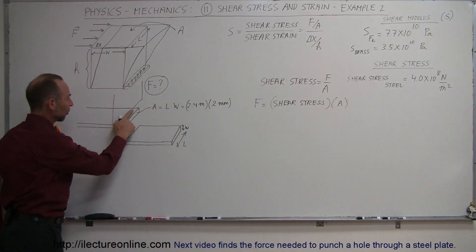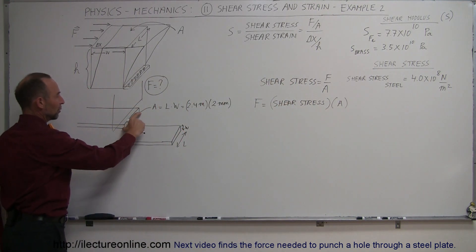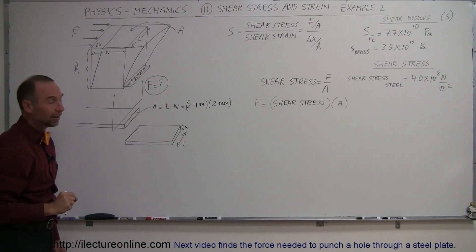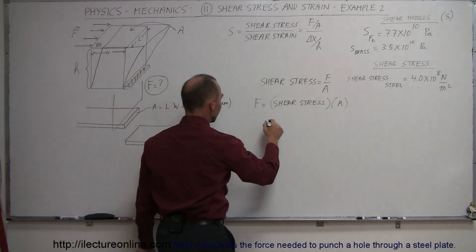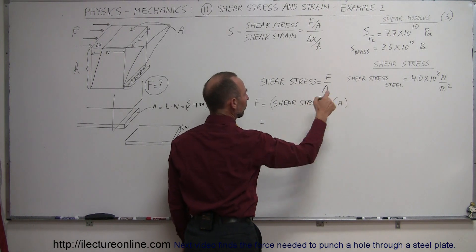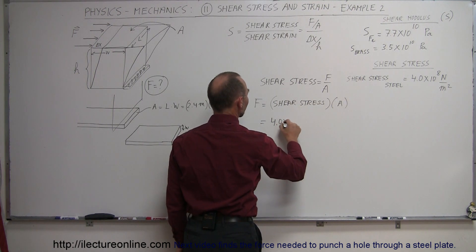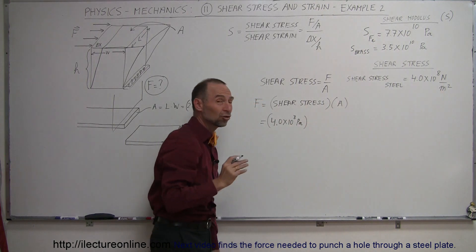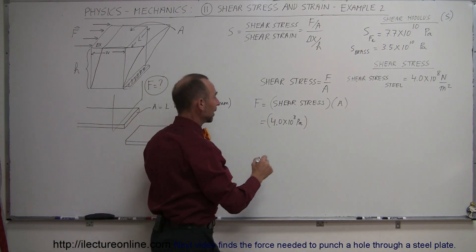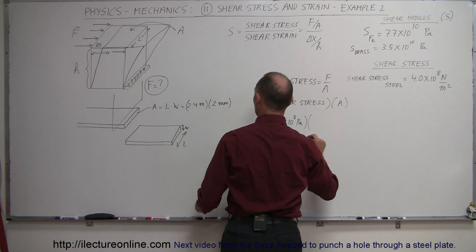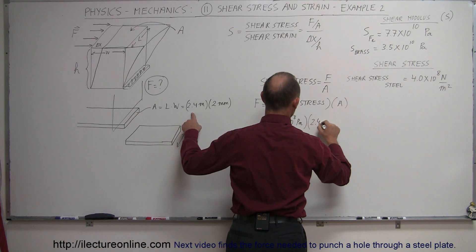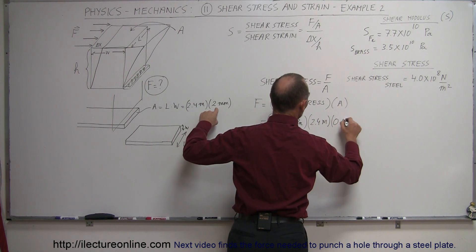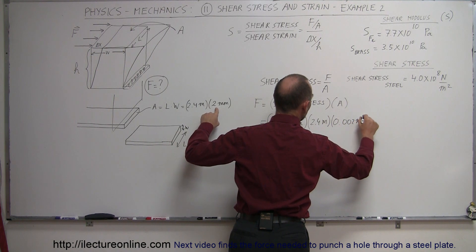The area of the cut is simply the exposed part of the cut, where the area would be the length times the thickness. The shear stress of the material is 4.0 times 10 to the 8 Pascals — not to be confused with the shear modulus — multiplied by the area: 2.4 meters for the length, and 2 millimeters, or 0.002 meters, for the thickness.